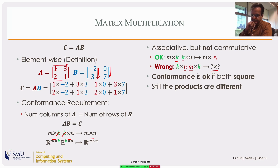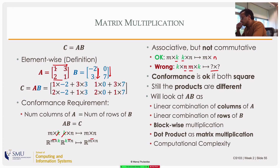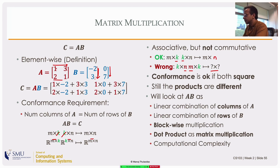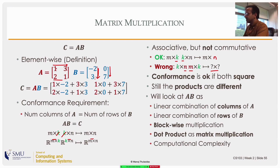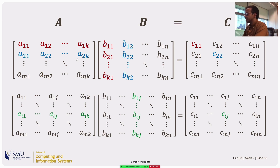Let's look at AB in different ways: first element-wise as in the definition, then as a linear combination of the columns of A, or a linear combination of the rows of B. We'll also look at the dot product as matrix multiplication, and matrix multiplication in terms of dot products.